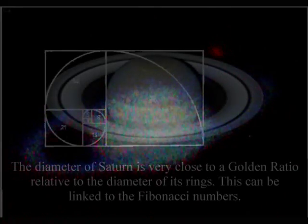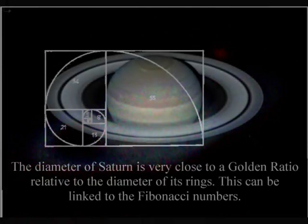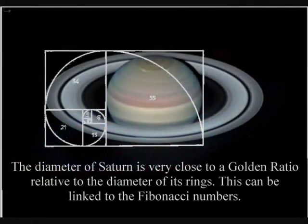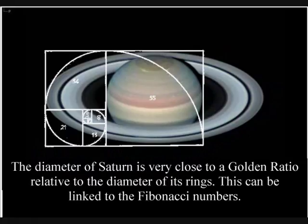The diameter of Saturn is very close to the golden ratio relative to the diameter of its rings. I have checked this with many different photographs of Saturn and it always seems to hold. In this image we can see that the inner ring division is in a relationship that is very close to the golden ratio.